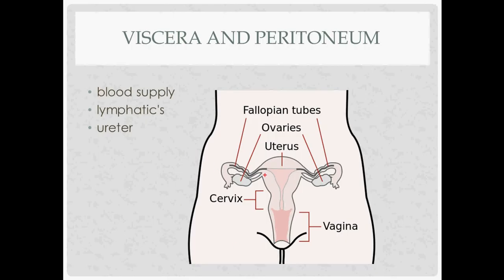The general layout: we have the uterus, fallopian tubes, ovary, and the utero-ovarian ligament. Where the fallopian tubes and round ligaments connect with the uterus is called the uterine horn, also called the cornu of the uterus. Drawing a line between those and going above it is the fundus of the uterus — the top — whereas below that line is the body of the uterus. Then we have the cervix, with the endocervical canal, and the vagina.